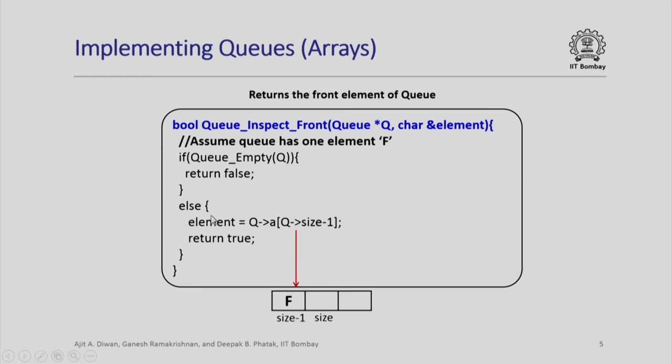Now if queue is empty I return false, else I put into the element the value of a which is size minus 1. This is how it will return the front of the element to me for inspection. Please note that the inspect front function does not change the status of the queue nor the contents of the queue.